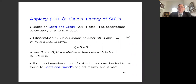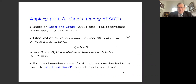Marcus Appleby, studying the Galois theory of the algebraic numbers appearing in the Scott-Grassl data, observed that these fields have a normal series where G and H are abelian and the index of G in H is 2. There was a discrepancy for D=14 that disagreed with the data; he went back to Scott and Grassl, a correction was found, and indeed the observation was confirmed even for D=14.